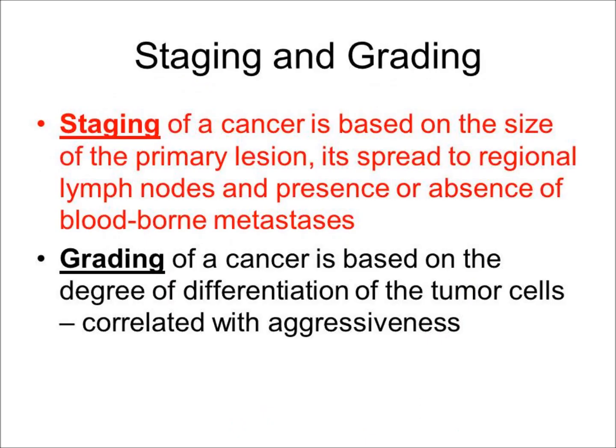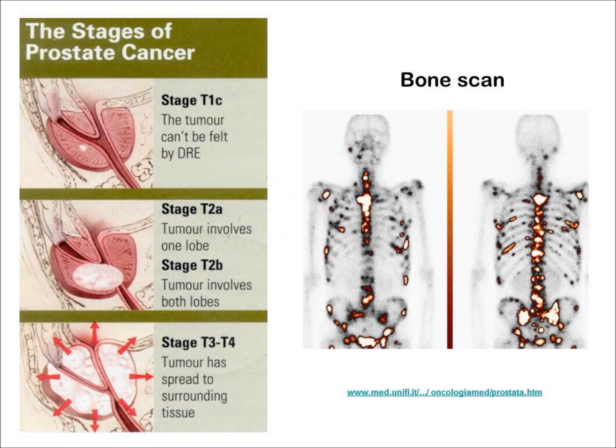Please remember the difference between staging and grading of cancers. Staging of a cancer is based on the size of the primary lesion, its spread to regional lymph nodes, and the presence or absence of blood-borne metastases. This slide shows the staging of prostate cancer according to the TNM system — basically, the higher the number, the worse the prognosis.